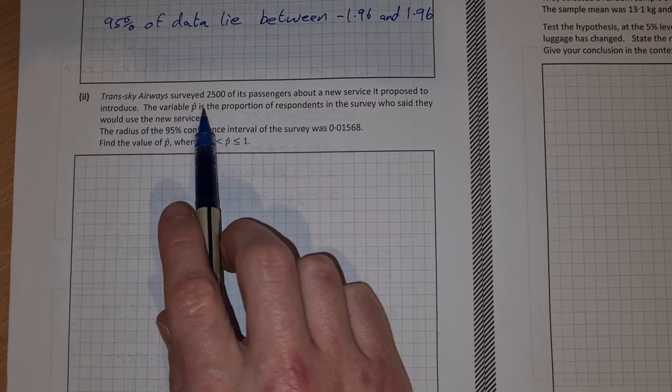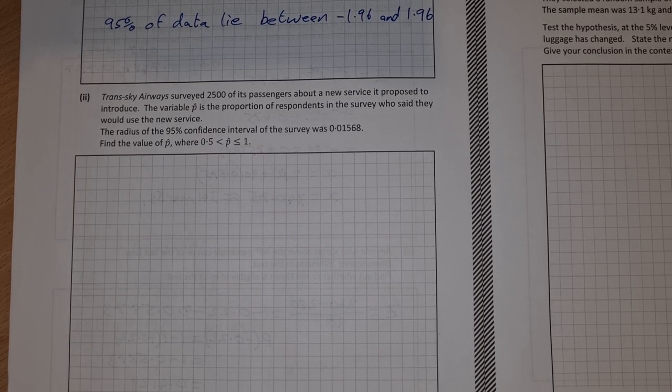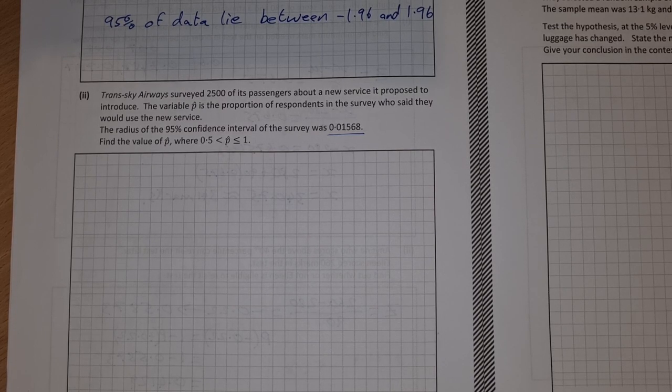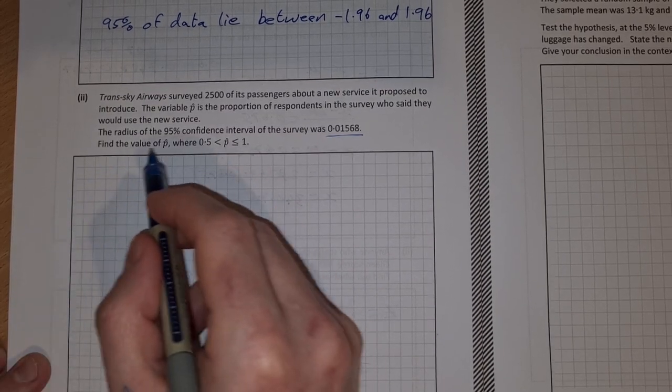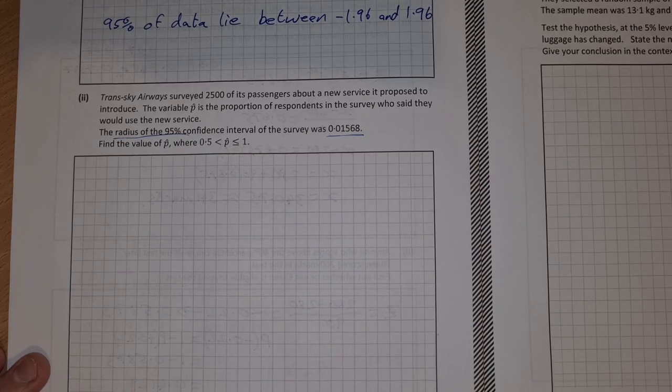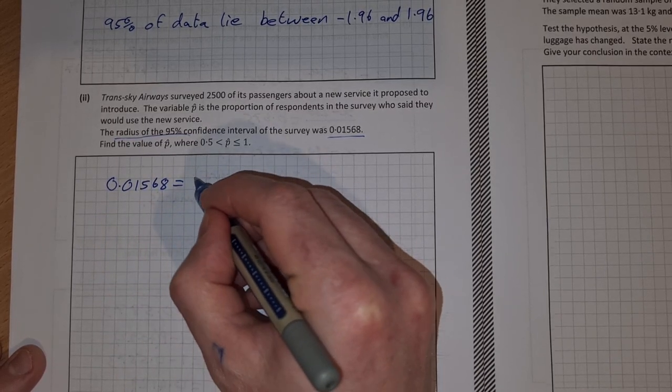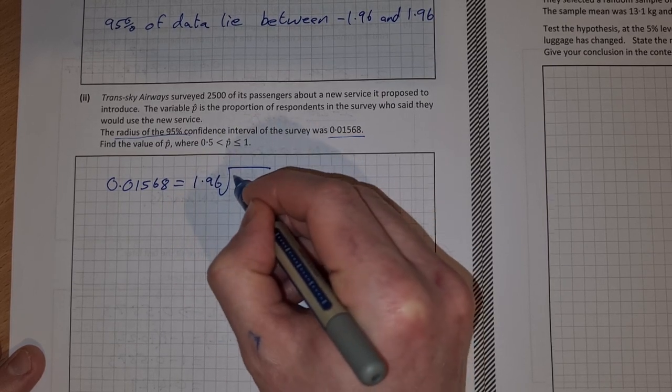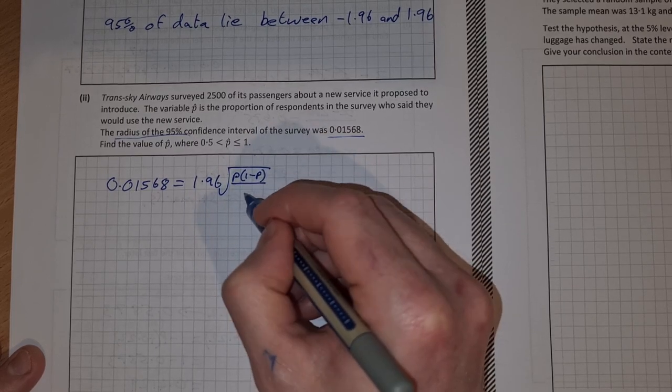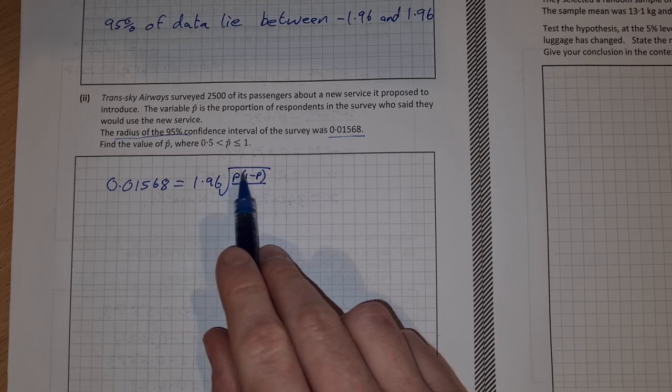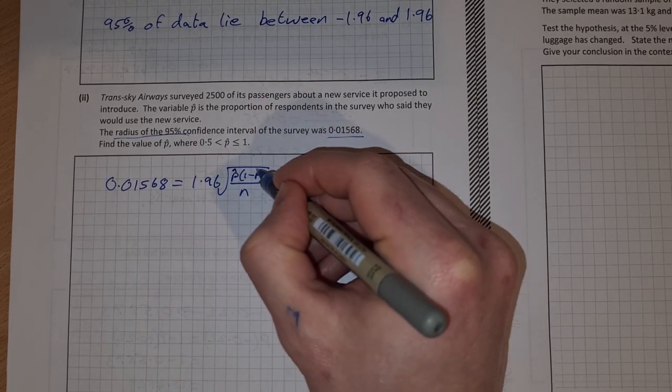Part 2. TransSky Airways surveyed 2500 of its passengers about a new service it proposed to introduce. The variable p-hat is the proportion of respondents in the survey who said they would use the new service. The radius of the 95% confidence interval of the survey was 0.01568. Find the value of p-hat where p-hat is between 0.5 and 1. The radius of the 95% confidence interval means that we set this up as 0.01568 equals our standard error, which is 1.96 times p times 1 minus p over n. We know n which is 2500 and then we can solve for p. This formula works for p-hat as well.